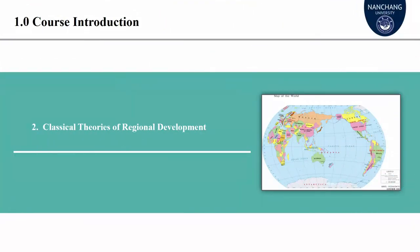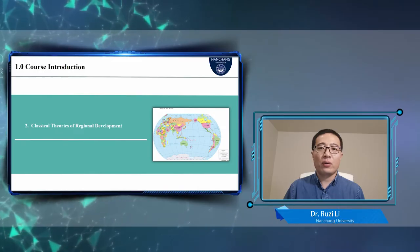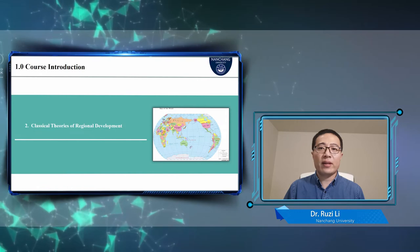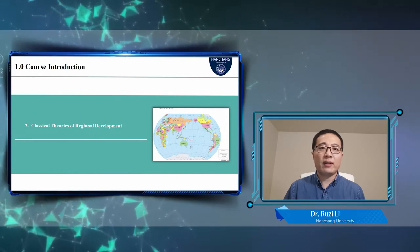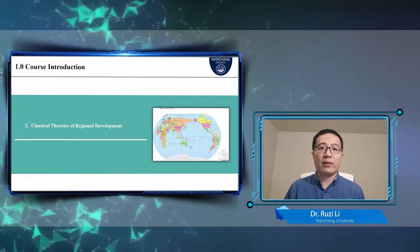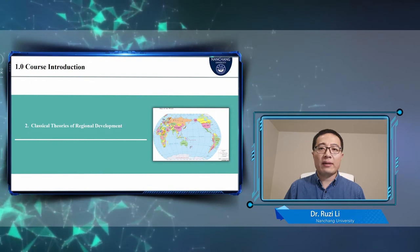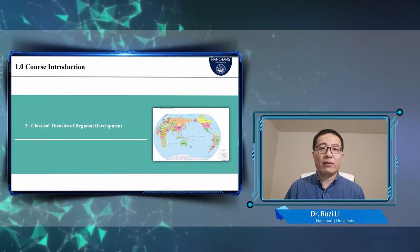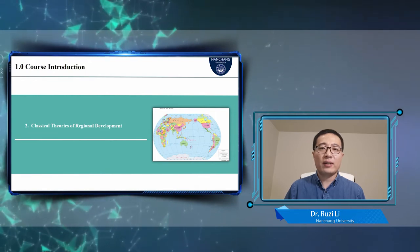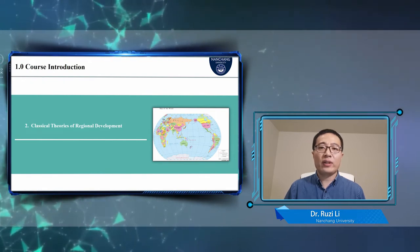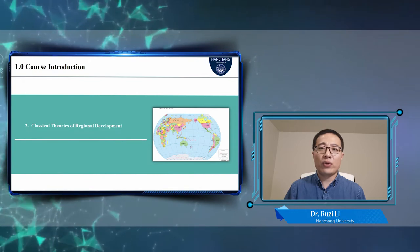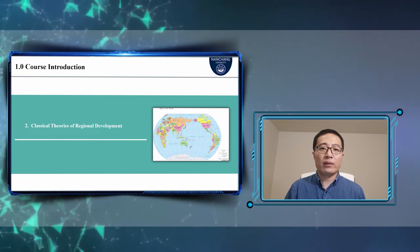The second part covers some classical theories of regional development, for example, growth pole theory, pole and axis system theory, center periphery theory, and so on. By understanding these theories, it will help us strengthen the intuitive thinking of regional issues.